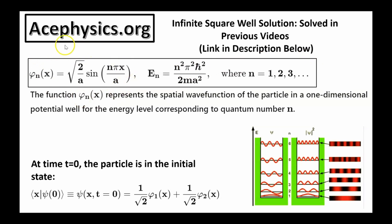Each wave function phi sub n depends on the quantum number n and represents an energy eigenstate in the position basis for a particle in a one-dimensional potential well. For example, when n equals 1, phi1 corresponds to the ground state; when n equals 2, phi2 represents the first excited state. In quantum mechanics, when a particle has a specific energy value, it does not have a precise position or momentum — instead, it has a spread of position values in position space and a different spread of momentum values in momentum space.